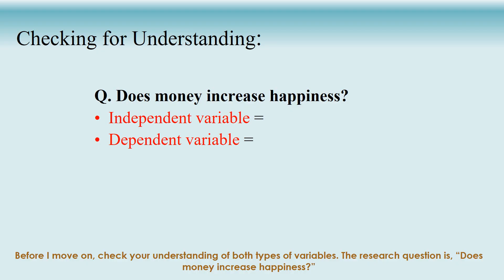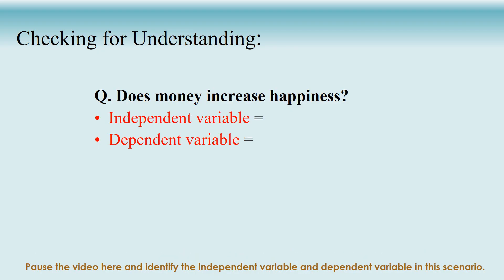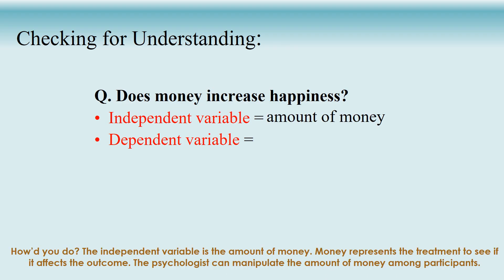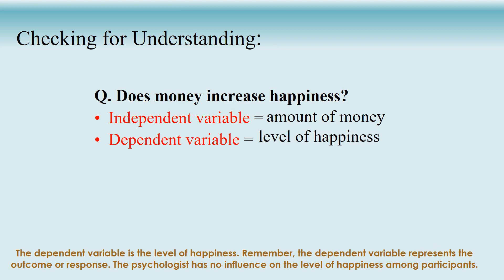Check your understanding of both types of variables. The research question is: does money increase happiness? Pause and identify the independent variable and dependent variable. The independent variable is the amount of money — it represents the treatment to see if it affects the outcome, and the psychologist can manipulate the amount of money among participants. The dependent variable is the level of happiness, representing the outcome or response. The psychologist has no influence on participants' level of happiness.